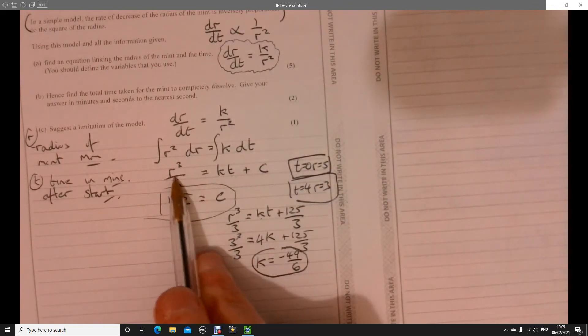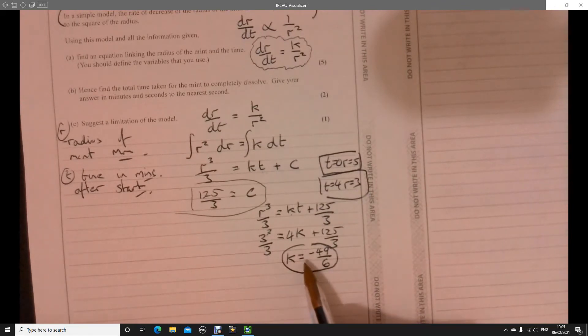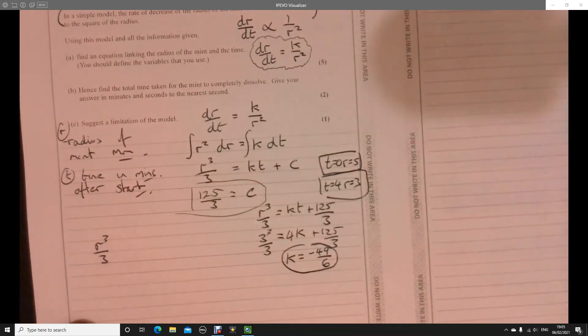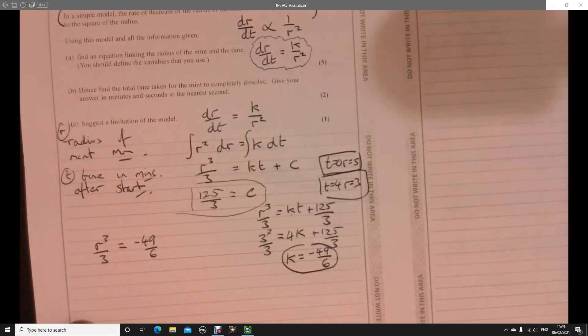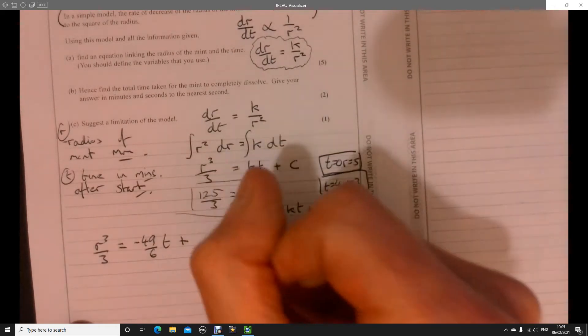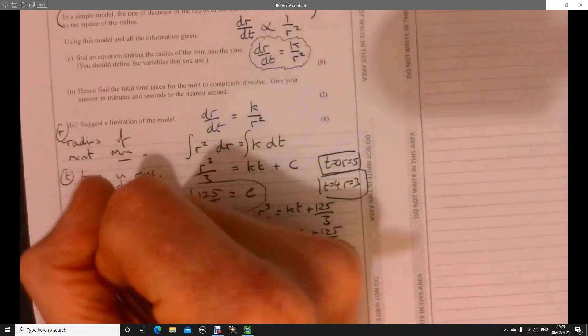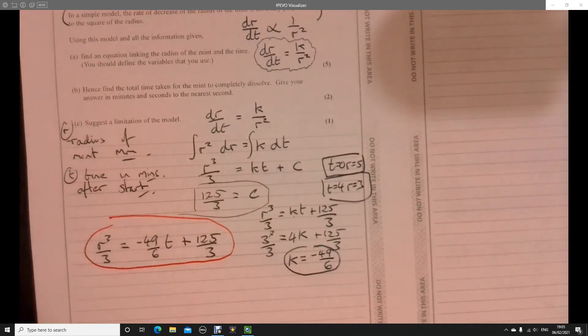So again, let's just rewrite what we've got. And then I'll just polish it off nicely then. So what have we got? We've got R cubed over 3 equals. Now, we've got K is minus 49 over 6. So let's write it down, minus 49 over 6 multiplied by T and then plus 125 over 3. There we go. Look at that. So that's part A done. That's great.